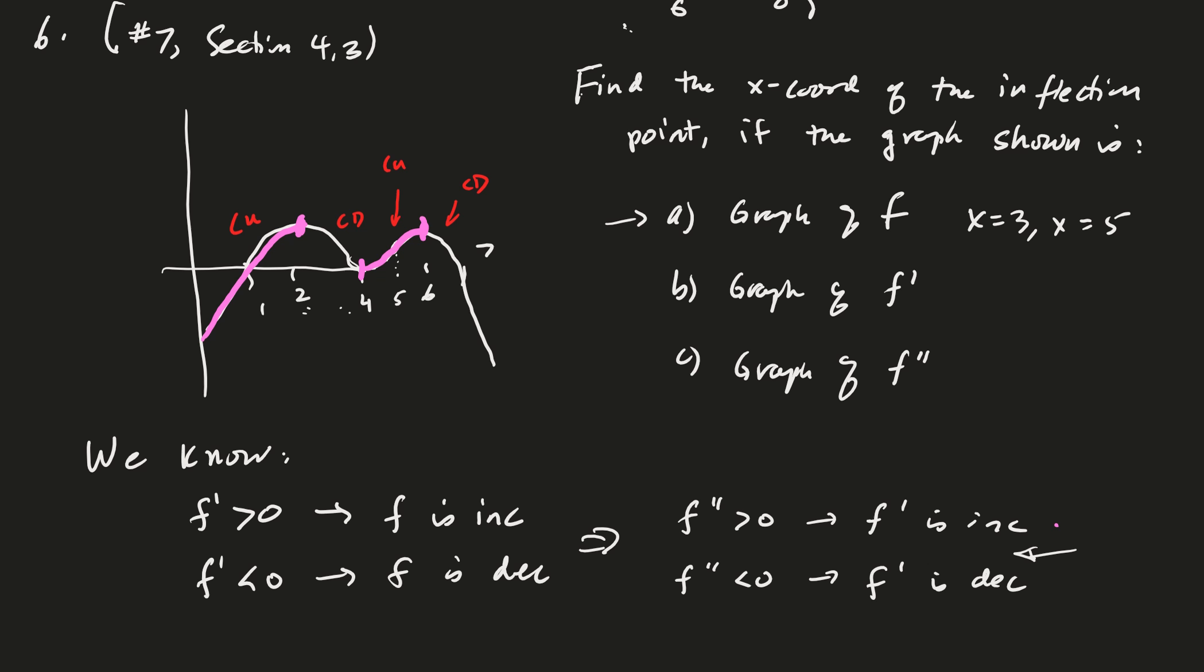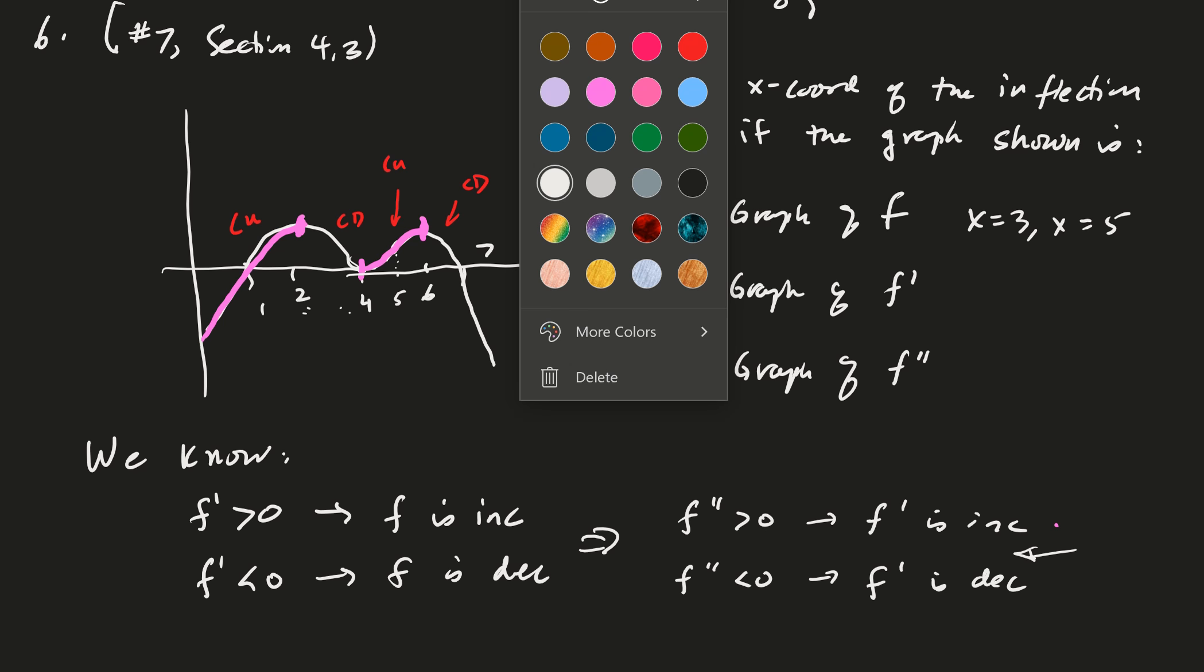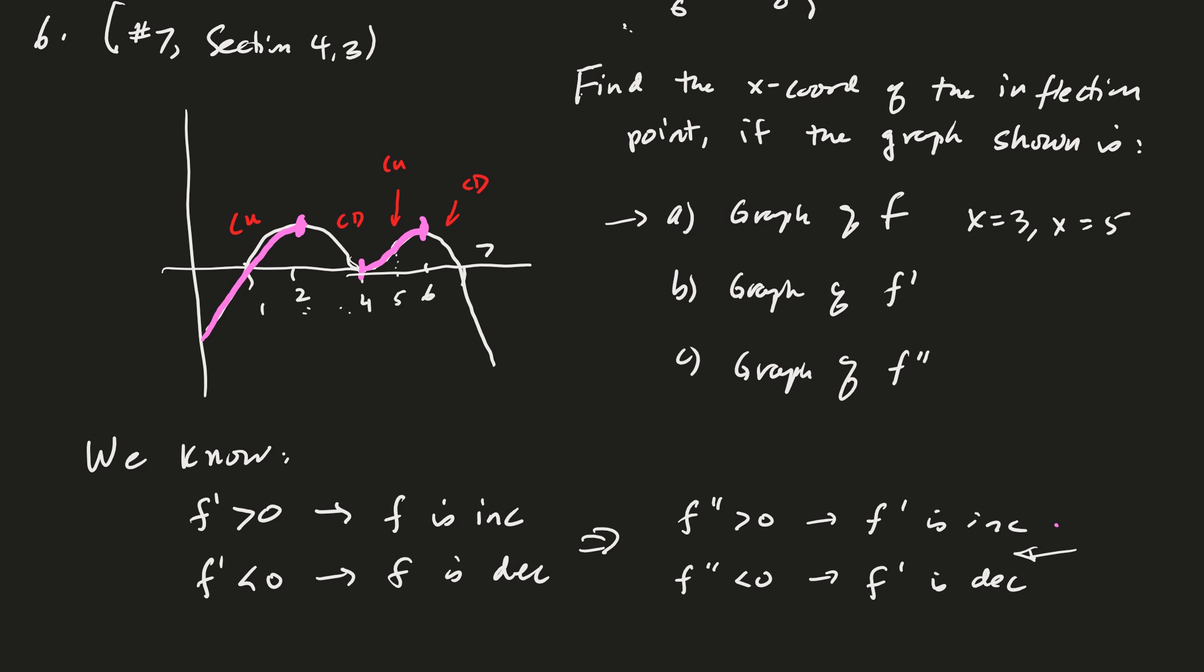My graph disappeared. Okay. So now we're just looking at where the change in concavity occurs. And it looks like it's at x equals 2. Whoops. Sorry about that. So x equals 2, x equals 4, and then x equals 6.